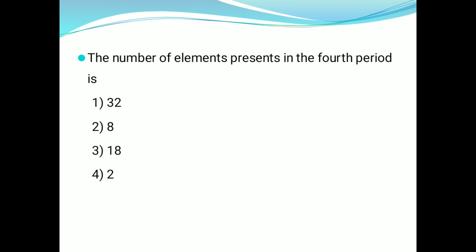Next one: the number of elements present in the fourth period is? In the fourth period, how many elements are there? In the periodic table, there are a total of seven periods. In the seventh period, and specifically in the fourth period, there are 18 elements.